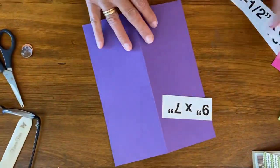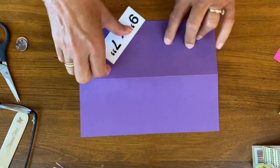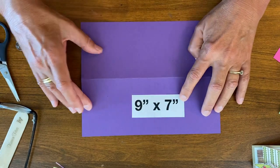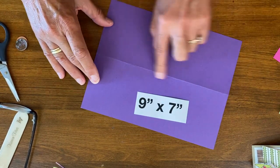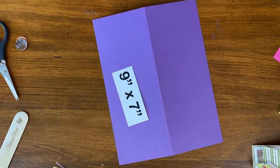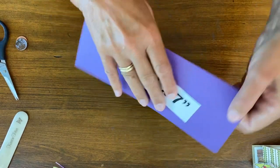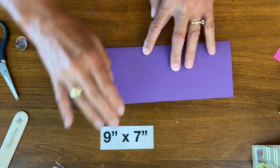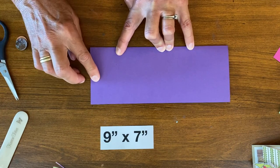So my base card is nine inches by seven inches, and it's scored in half along the seven inch side. So this is three and a half. So when it's scored, now my card base is nine inches by three and a half.